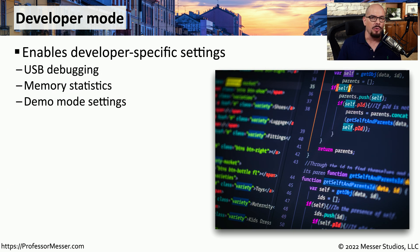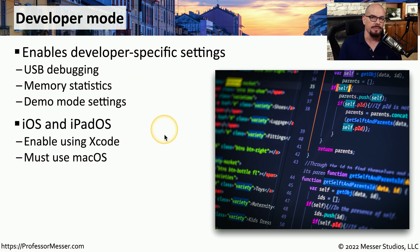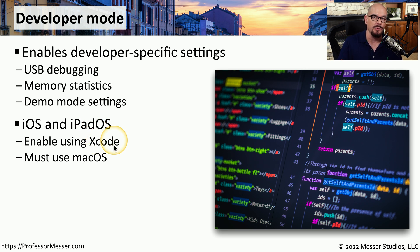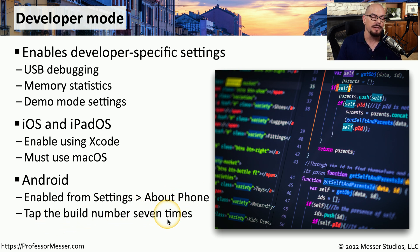Our mobile devices support a function that's primarily used by developers, but it can also be used to help troubleshoot the device. This is developer mode and allows you access to view information through USB debugging. You can look at memory statistics, and there are settings to run the device in a demo mode. To view log files in an iOS or iPadOS device, you would need to use Xcode, which is software that runs in macOS. To put your Android device in developer mode, you would go into Settings and About Phone, and then tap the build number seven times.